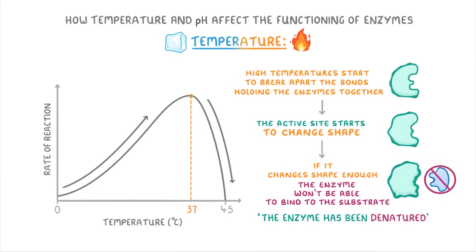Another important term to know is the optimum temperature, which is this temperature here at which the rate of reaction is highest. So in this case, that would be 37 degrees. All enzymes have an optimal temperature, but different enzymes will have different optimal temperatures.